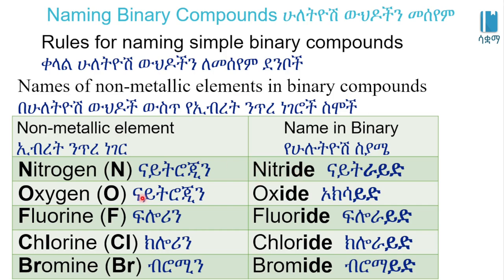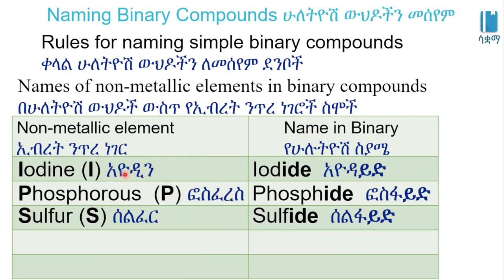Oxygen becomes oxide. Fluorine becomes fluoride. Chlorine becomes chloride. Bromine becomes bromide. Iodine becomes iodide. Phosphorus becomes phosphide. Sulfur becomes sulfide.